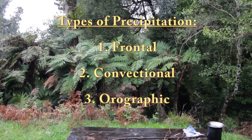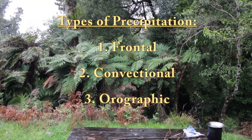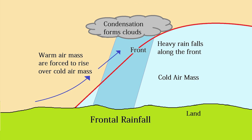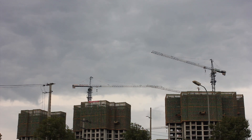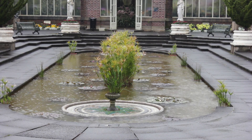There are three main causes of precipitation. Frontal precipitation takes place at the boundaries where two air masses of different densities meet — for example, where a cold air mass meets a warm air mass. Where the air meets, the warm air is cooled and water vapour condenses. Clouds form and precipitation occurs.